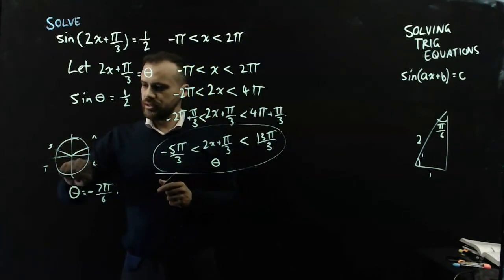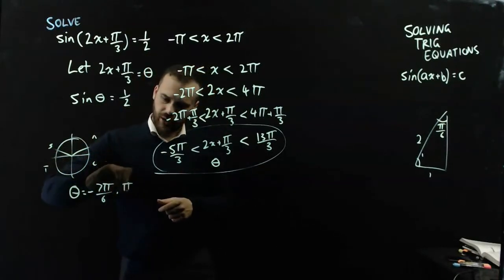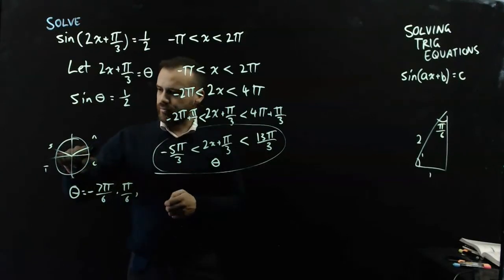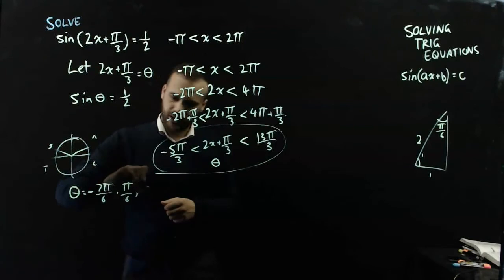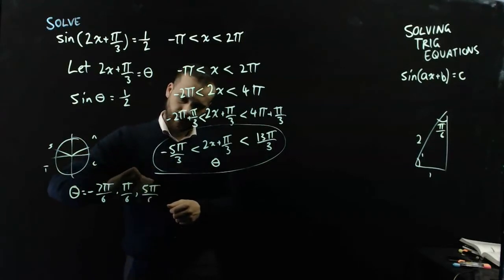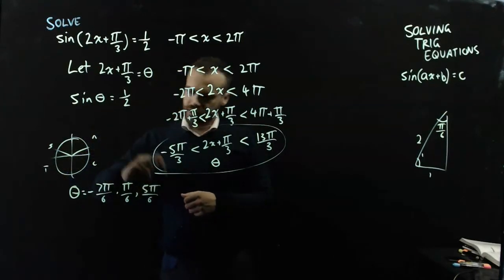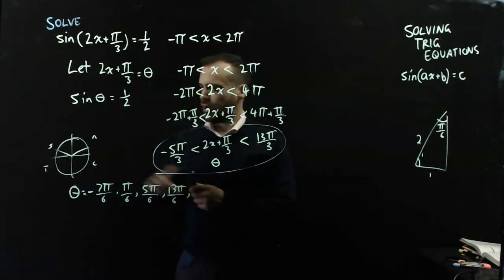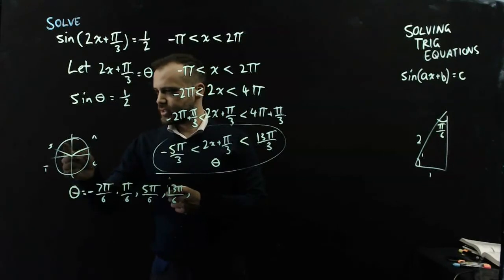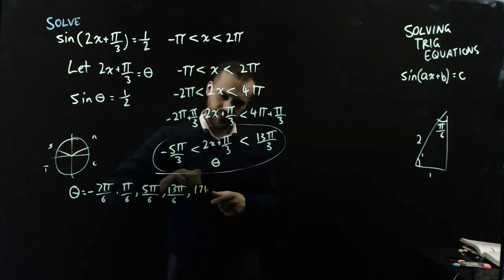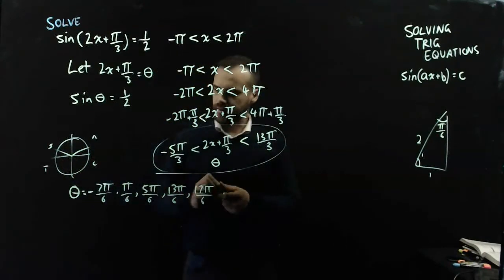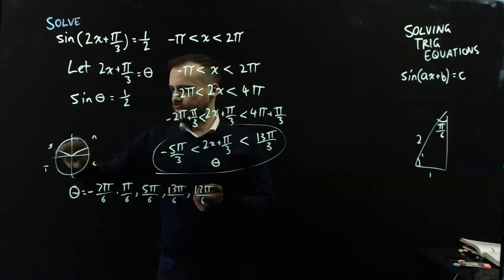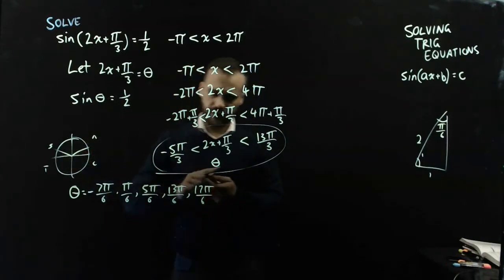So I get 2 answers, 4 answers, and a 5th answer. So I'm going to get pi on 6, pi on 6, 2, 3, 4, 5pi on 6, 12pi on 6, 13pi on 6, 13, 14, 15, 16, 17pi on 6. And 12pi on 6, 24, 25pi on 6.